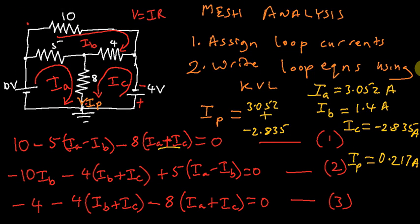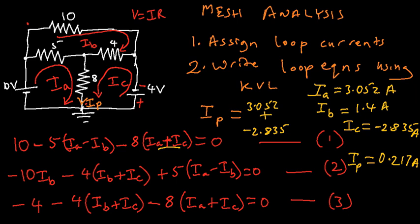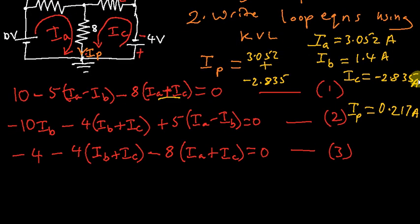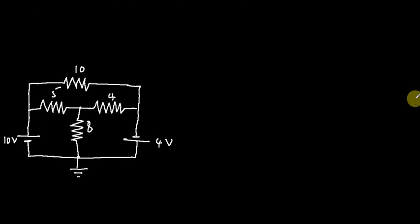It's the same circuit, so no matter the method you use you should arrive at the same answer. If you use one method and get one answer, then use a different method and get a different answer, you know something is wrong. So that's the branch current method and mesh analysis. Now let's go ahead and deal with nodal analysis.